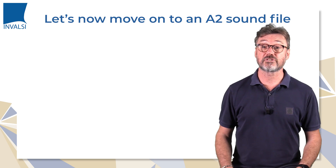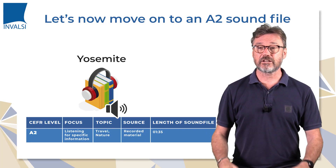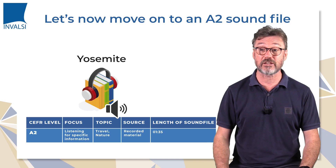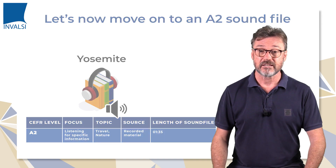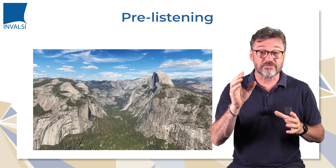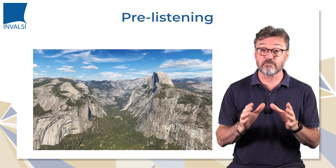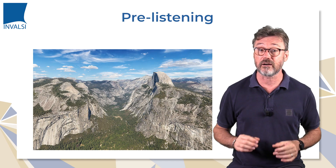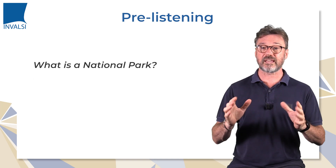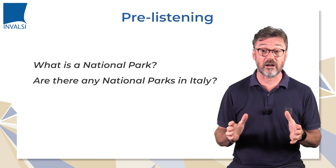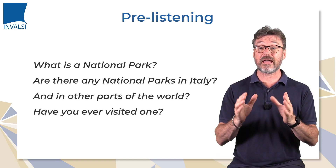Let's now pass to an A2 sound file entitled 'Yosemite'. It contains descriptive, factual, specific information and important details about this American national park. As we have already stated, in order to facilitate comprehension, a pre-listening phase is necessary. Since students might not be familiar with Yosemite National Park, we're going to ask them a couple of questions: What is a national park? Are there any national parks in Italy? And in other parts of the world? Have you ever visited one?